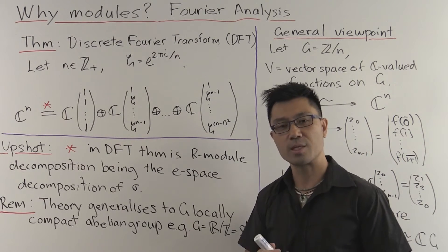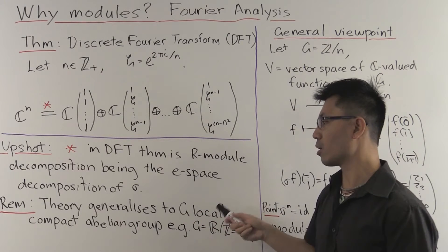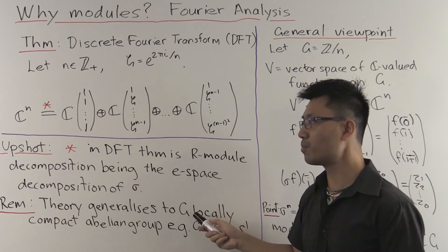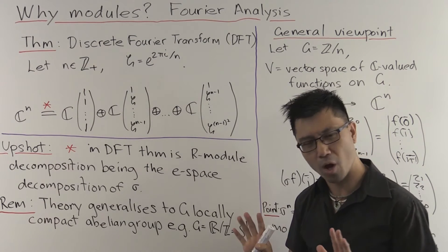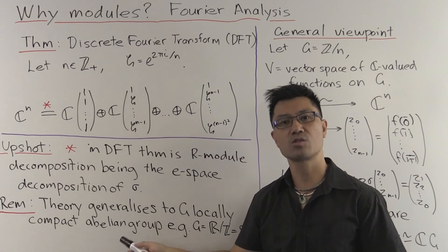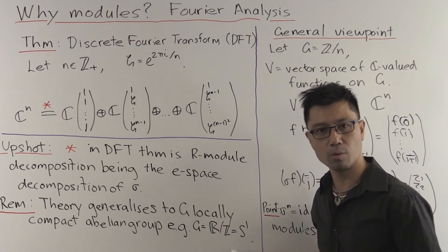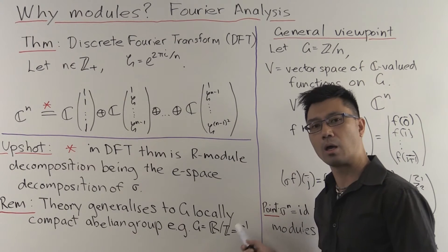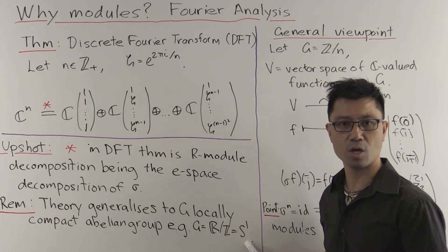The other thing that we see is that actually this theory generalizes to other groups, not just the finite cyclic group that we have here. In fact, it generalizes, with some work, to groups G which are locally compact Hausdorff and Abelian. And the simplest example, of course, is just the real numbers modulo integers, R mod Z, also known as the circle group. And if you work in this context here, what you'll get is the theory of Fourier series.